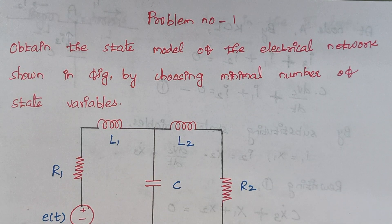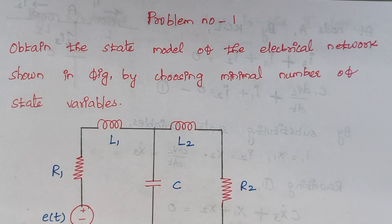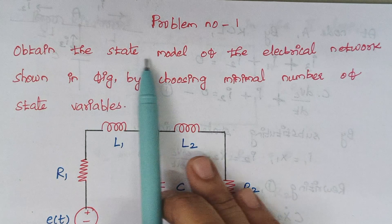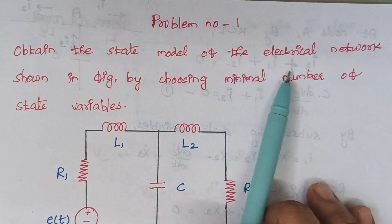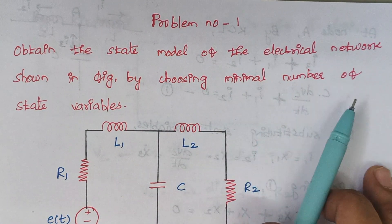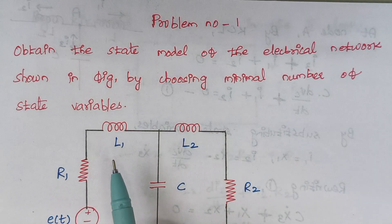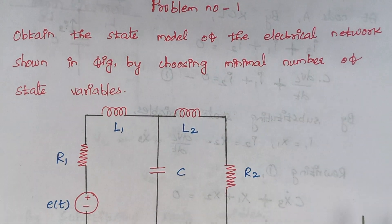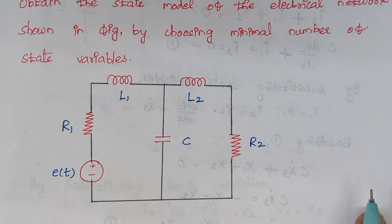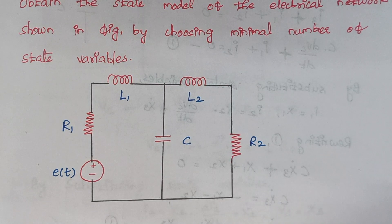Hello viewers, I am Kausalya. Today we are going to solve problem number 1 under the topic state space analysis. The problem is: obtain the state model of the electrical network shown in the figure by choosing the minimal number of state variables. This is the given circuit diagram, and for this circuit diagram we have to create a state model.